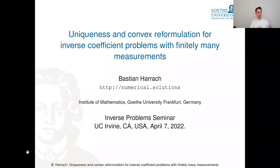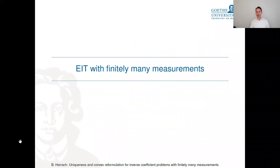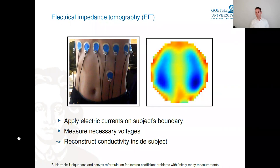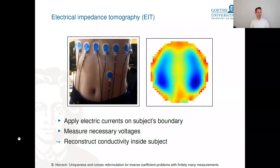Let me jump right into probably the most famous inverse coefficient problem: the Calderón problem, or electrical impedance tomography (EIT). In EIT, we attach electrodes to the outside of a patient, drive electrical currents through them, measure how much voltage we need, and try to reconstruct an image of the interior conductivity distribution. The reconstruction shown here is of my own lung.